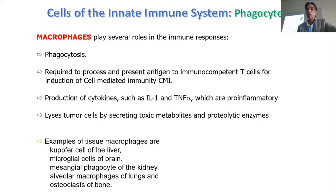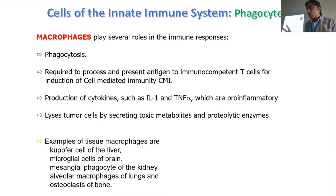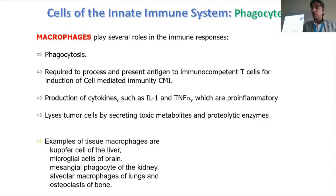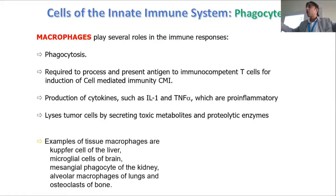Macrophages are known for their production of cytokines. They produce IL-1 (interleukin-1) and TNF-alpha (tumor necrosis factor alpha) — these are pro-inflammatory cytokines. They start creating an environment for immune action. When a macrophage finds a bad thing, it not only eats it but also releases cytokines that diffuse to other parts of the body, helping other cells sense that something is happening at that place, causing them to rush to that site — resulting in inflammation.